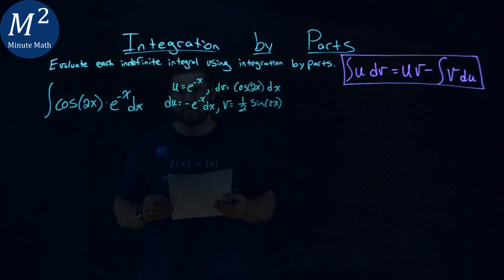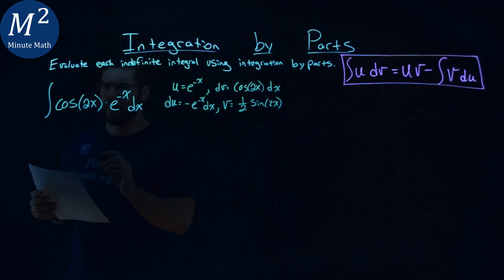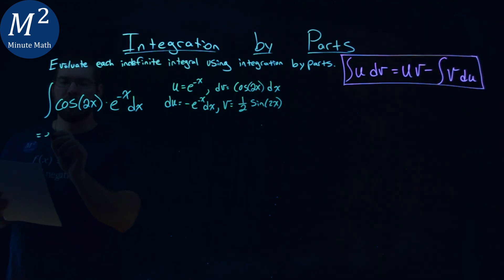So we have all that set up. Let's apply our formula. We're going to take our time here. We have u times v, u value e to the negative x, times my v value one-half sine of 2x.